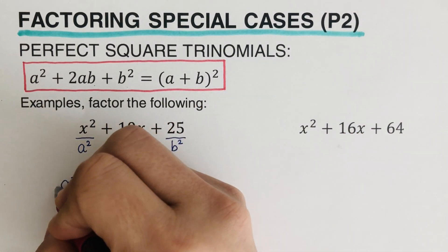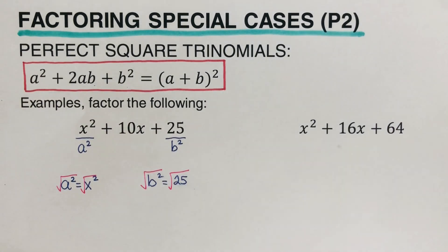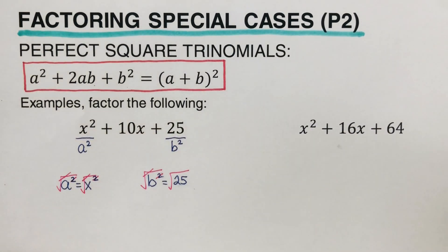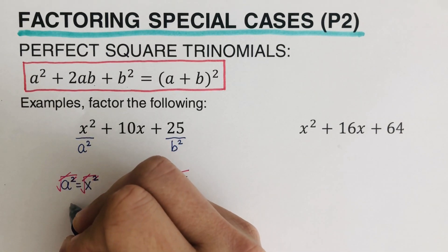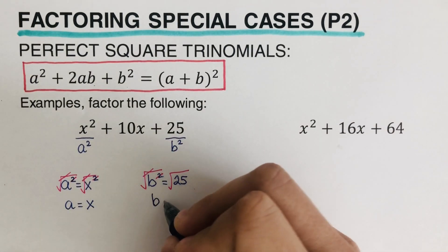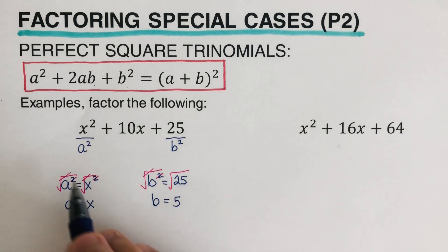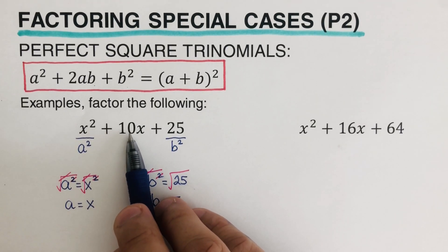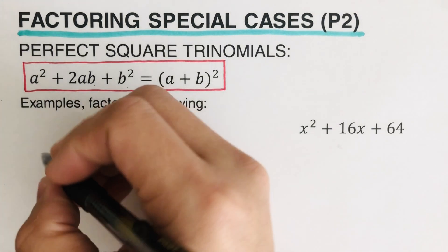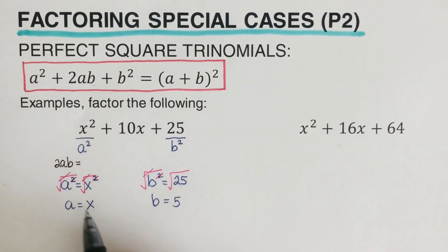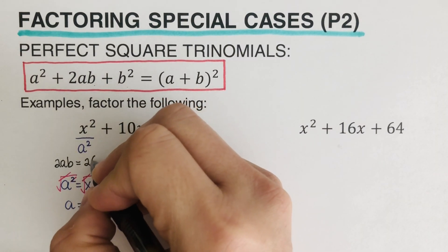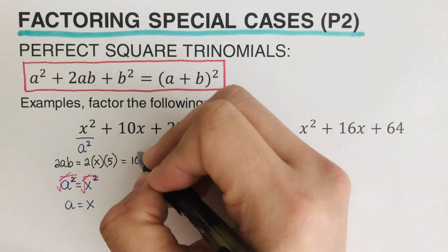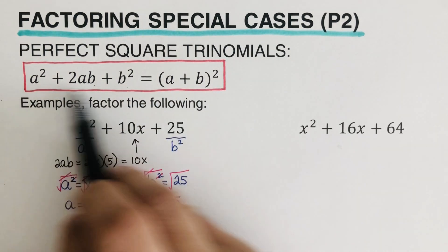We square root both sides to get a by itself. The square root and squared cancel out, so a equals x and b equals 5. Now we check whether the middle term equals 2ab. That's 2 times a (which is x) times b (which is 5), giving us 10x — which is indeed the middle term. So this equation works.